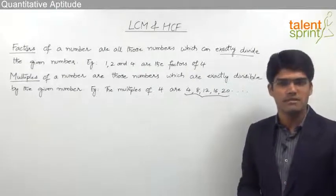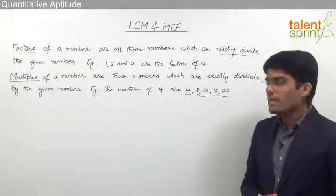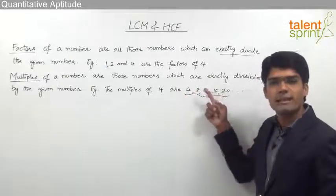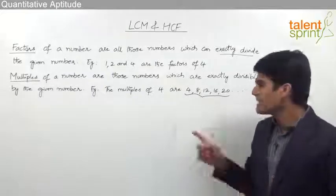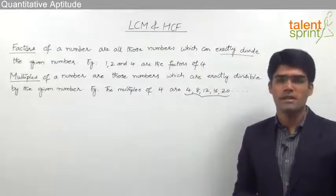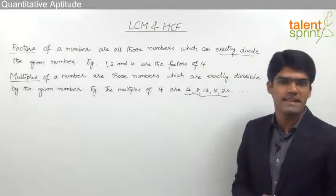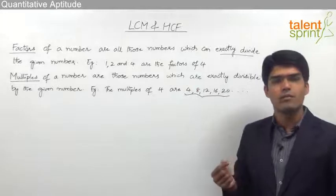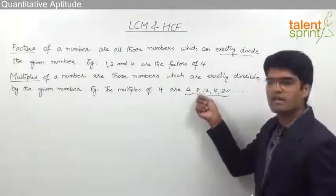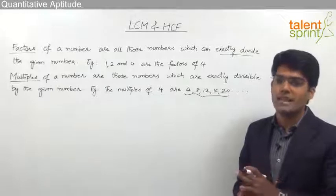This is the difference between factors and multiples. Factors can exactly divide the given number, and multiples are exactly divisible by the given number. We do not take 5, 6 or 7 as multiples of 4, because when divided by 4 they do not give an integer result. For example, 5 by 4 is 1.25, 6 by 4 is 1.5, and 7 by 4 is 1.75 — none of these are exact divisions.